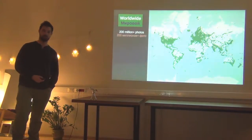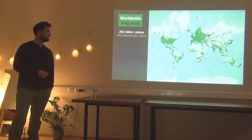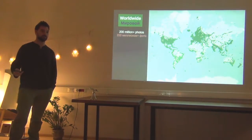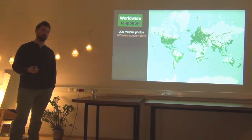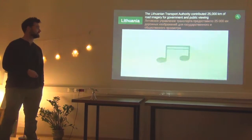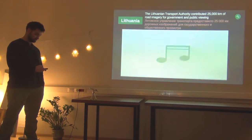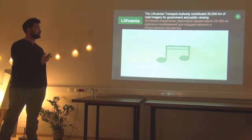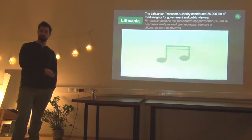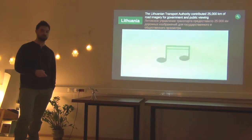Through the whole world we have over 200 million photos — 100 million photos just in 2017. Most of these come from individual users, not from groups or companies, though we do some work with government, business, and nonprofit. In Lithuania, the Transport Authority contributed 25,000 kilometers of images for all the highways. It's now on Mapillary and can be used for improving maps.